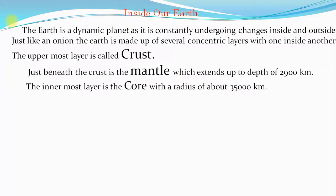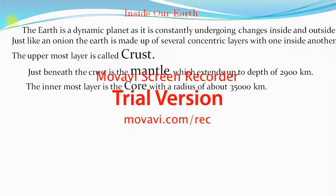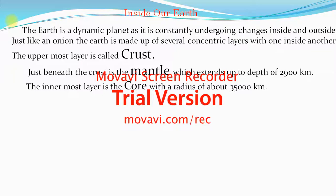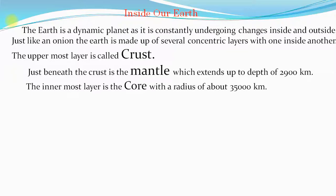There are several types of changes that go inside and outside the Earth. The Earth is made up of layers. A dynamic planet means a planet that is constantly undergoing changes both inside and outside.